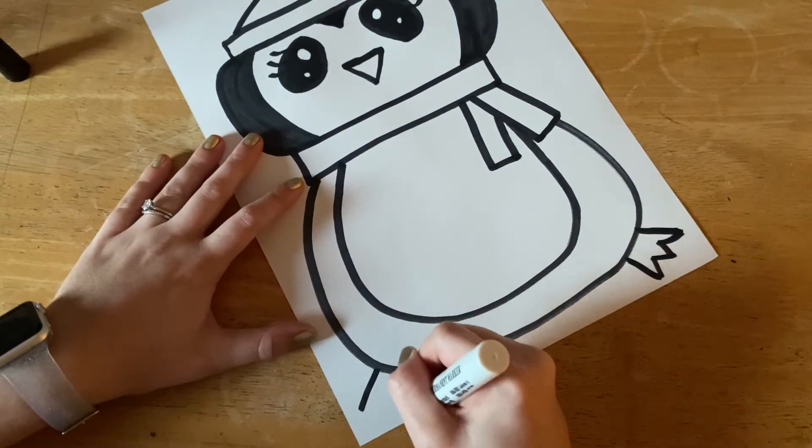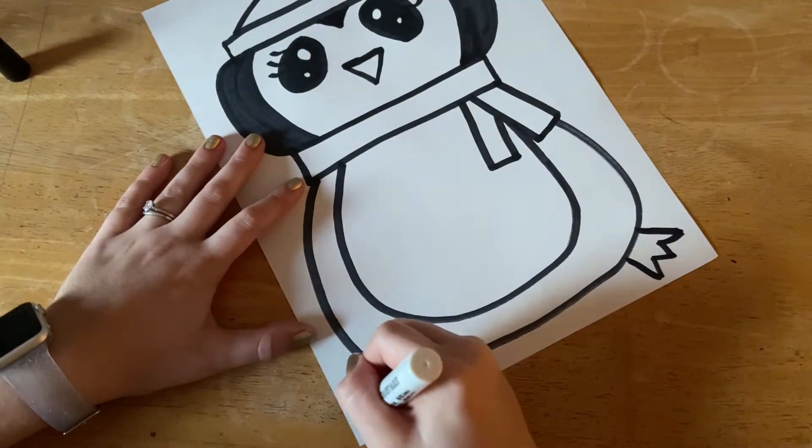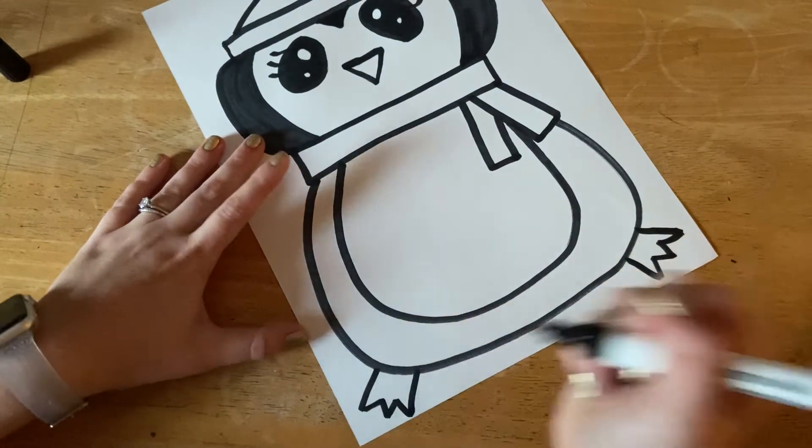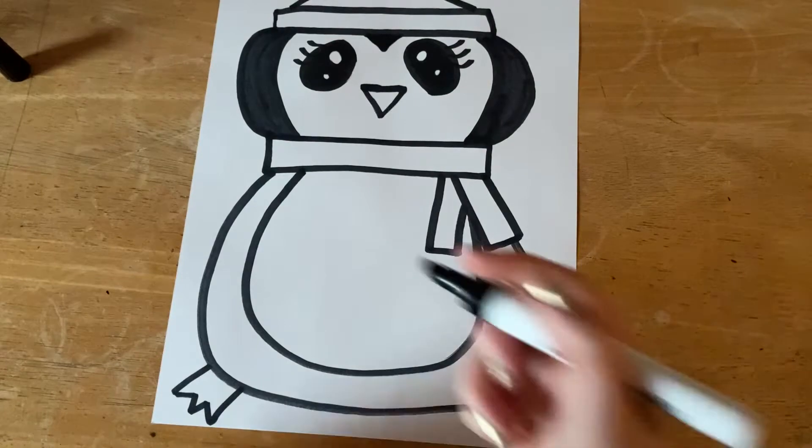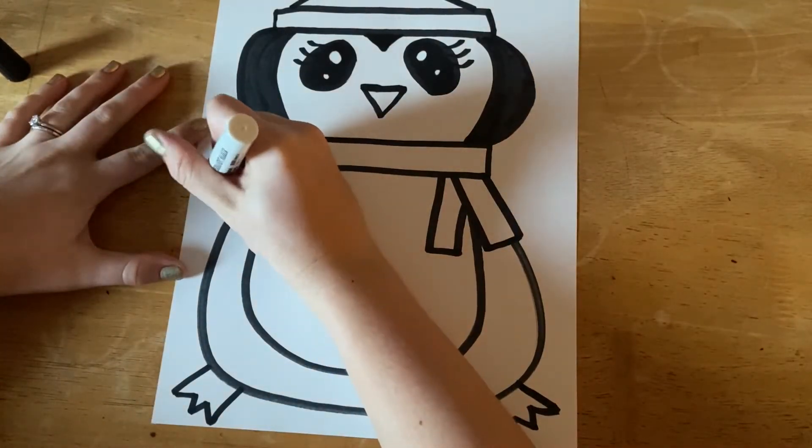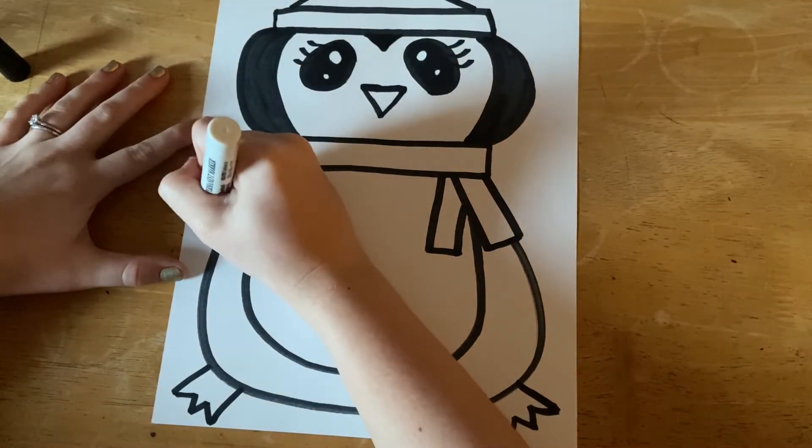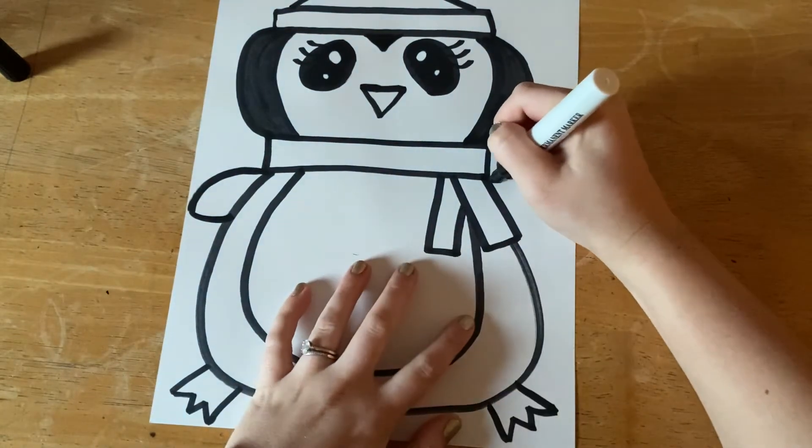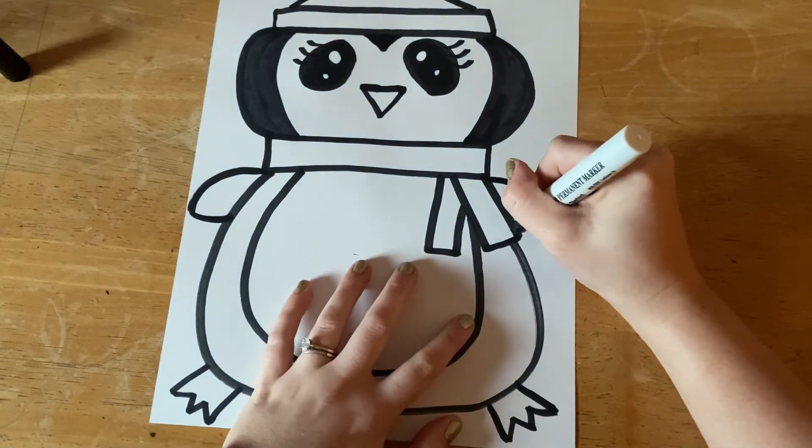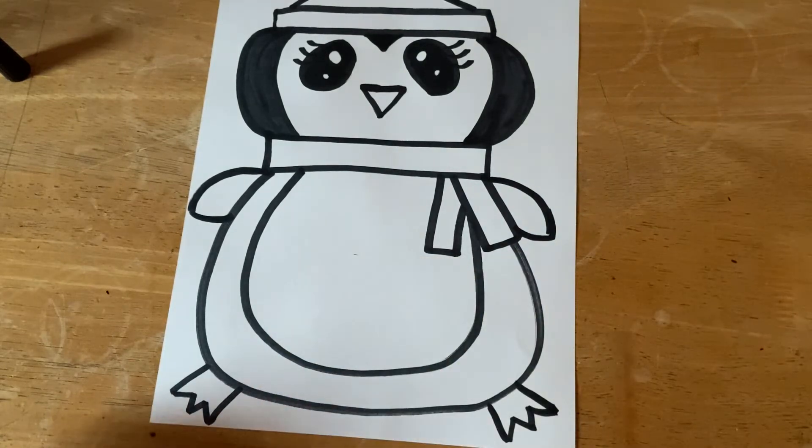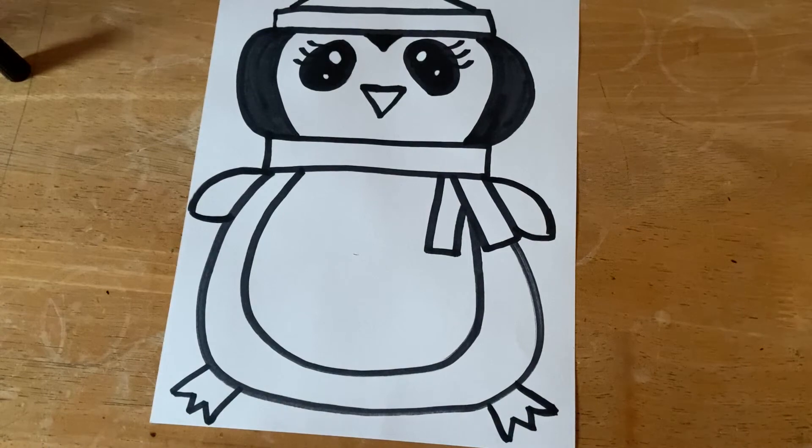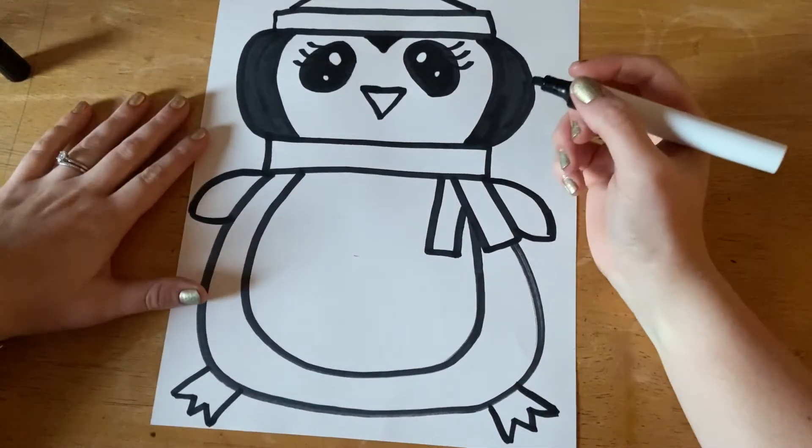Two lines, capital letter M. Oh my goodness, so cute! Now let's add our wings. It's a good thing penguins can't fly because our little penguin would definitely not be able to fly with these tiny little wings, but that's okay.